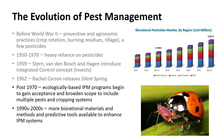Integrated pest management evolved from the integrated control concept. The premise of IPM was built on the philosophy that natural controls should be maximized, enhanced, and relied on whenever possible. Pesticides should be used only when the population of a pest reached a threshold level that caused economically significant damage and where natural controls were not effective.